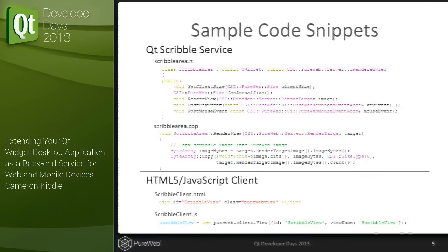Here are some sample code snippets showing what's involved, using the standard QtScribble sample. This particular snippet shows how you remote a view in your application. Any view you want to remote will inherit from iRenderView — in this case the ScribbleArea QWidget itself. In doing so, you write five different functions: a couple dealing with the size of the image, a RenderView function shown in the ScribbleArea.cpp where you copy the rendered image into the PureWeb pipeline to be distributed to clients, and functions to map the mouse and keyboard events coming back, translating them into Qt mouse and keyboard events.